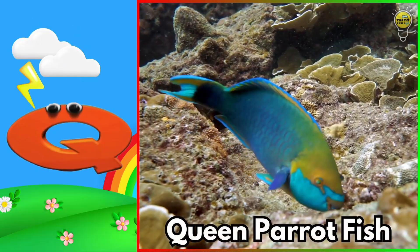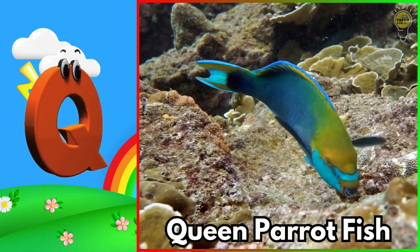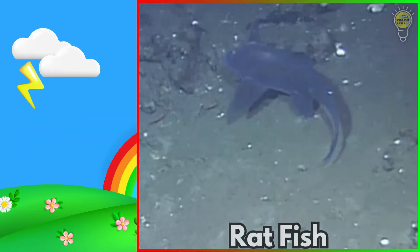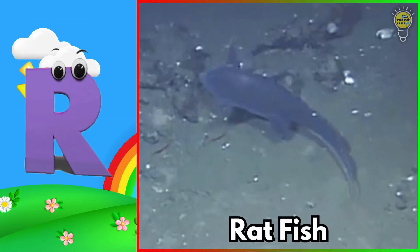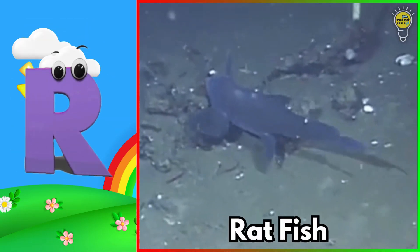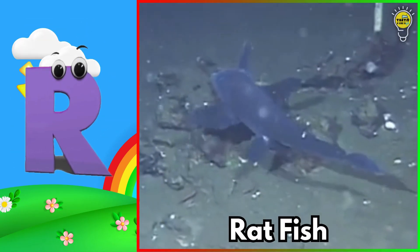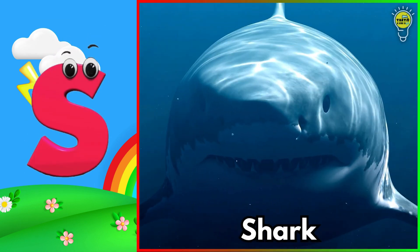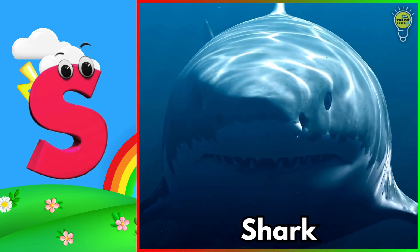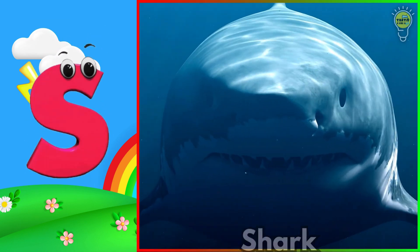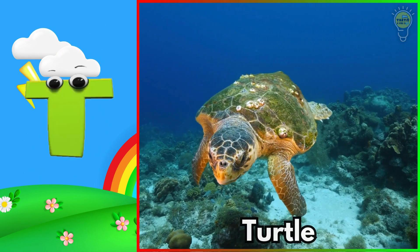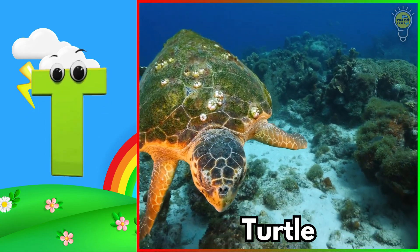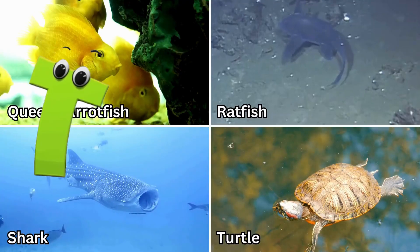Q is for queen parrotfish. Quh, quh, queen parrotfish. R is for ratfish. R, r, ratfish. S is for shark. S, s, shark. T is for turtle. T, t, turtle.